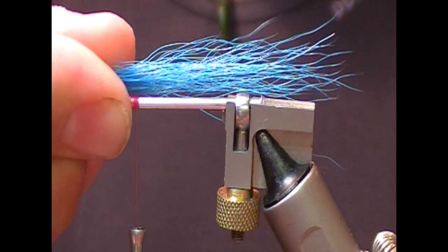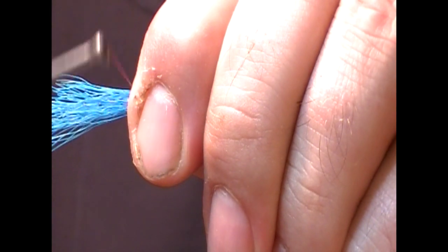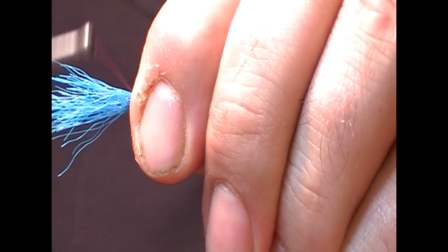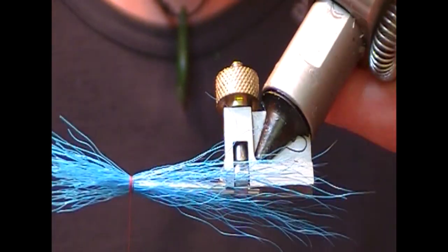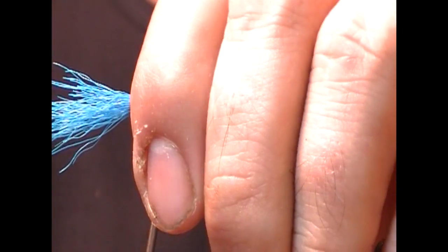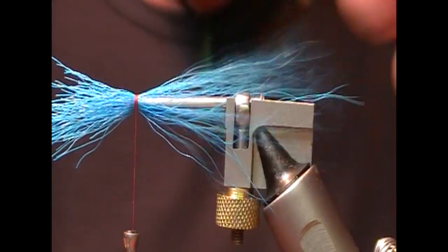Then we take that and apply it to our tube, let it envelop all the way around. Turn the fly around just to check that it's all the way. A few turns just to tighten that in.